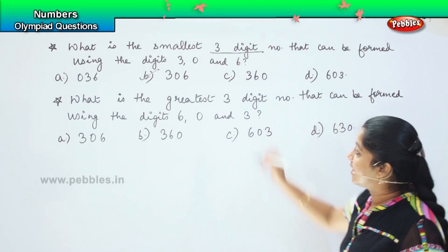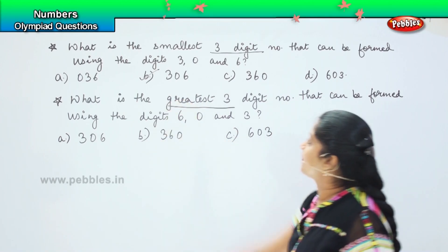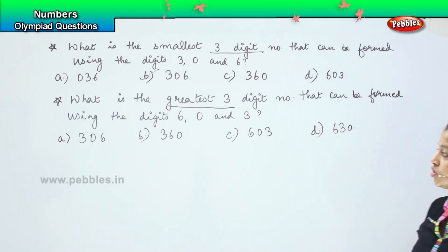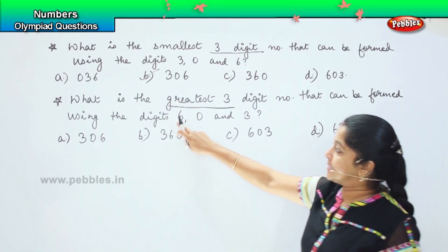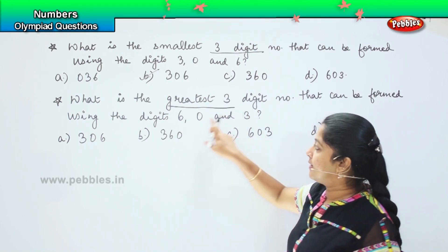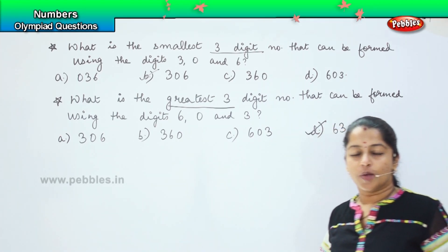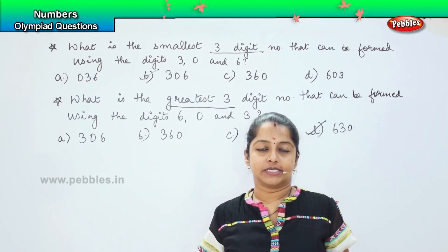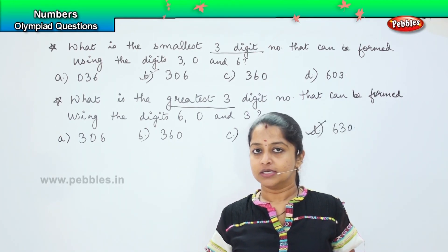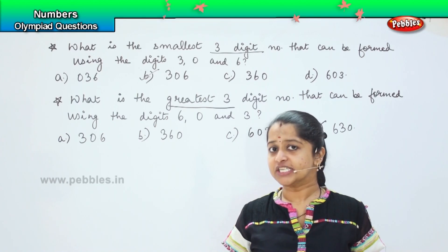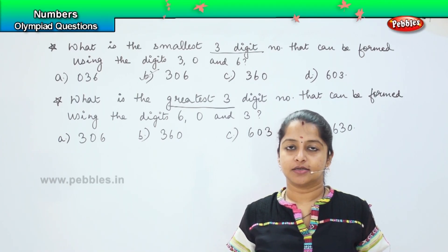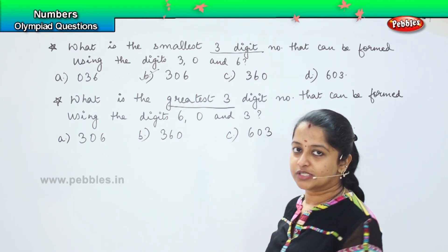Now we need to find the greatest three digit number. The greatest number is 6, then comes 3, then comes 0. So it should be 630. Where can you find 630 children? Very good. It is option D. Option D is my right answer. Clear? Shall we proceed? It is interesting to solve these questions. Are you ready to get up with the new set of questions?